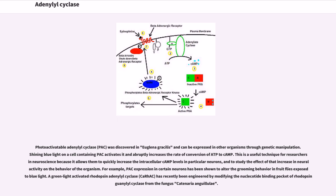Photoactivatable adenylyl cyclases (PAC) were discovered in Euglena gracilis and can be expressed in other organisms through genetic manipulation. Shining blue light on a cell containing PAC activates it and abruptly increases the rate of conversion of ATP to cAMP. This is a useful technique for researchers in neuroscience because it allows them to quickly increase intracellular cAMP levels in particular neurons and to study the effect of that increase in neural activity on the behavior of the organism. For example, PAC expression in certain neurons has been shown to alter the grooming behavior in fruit flies exposed to blue light.